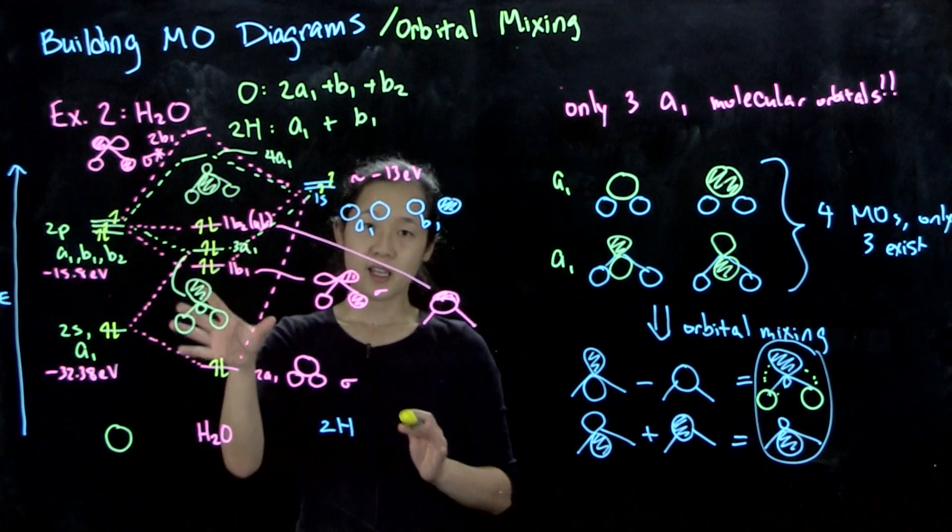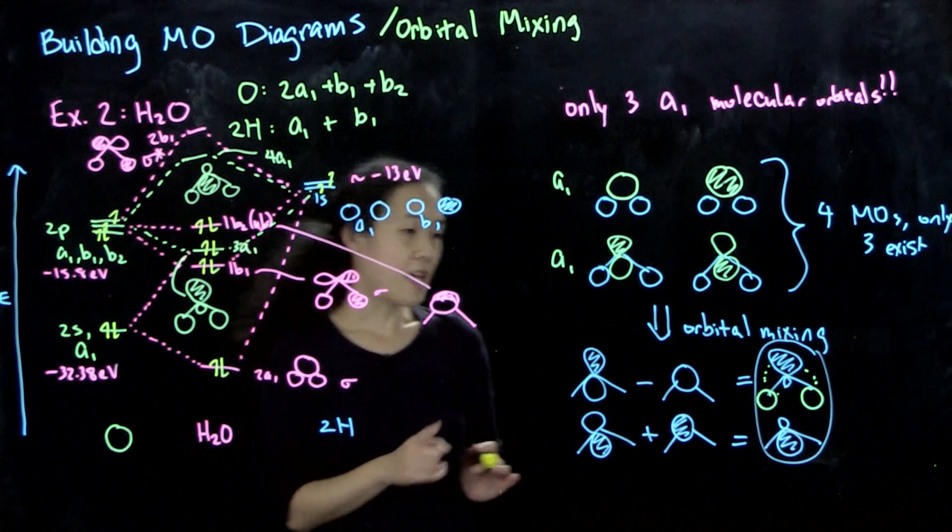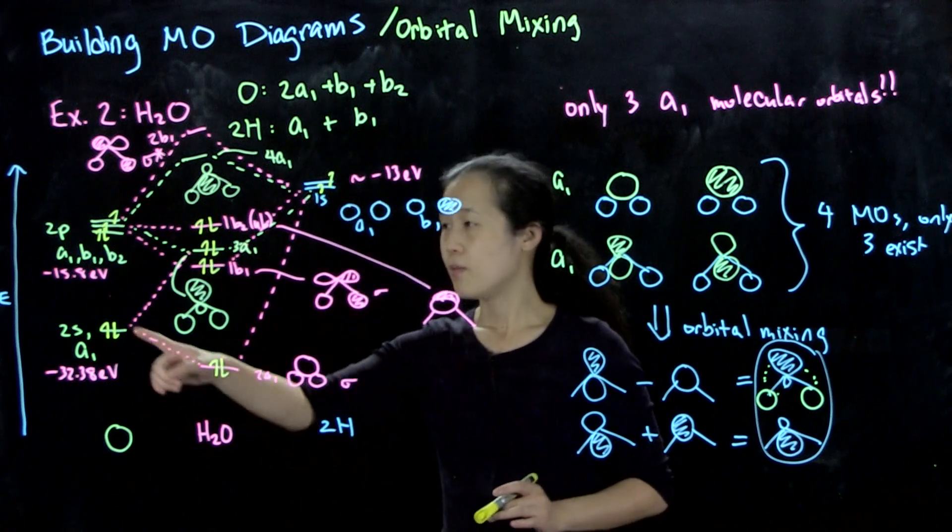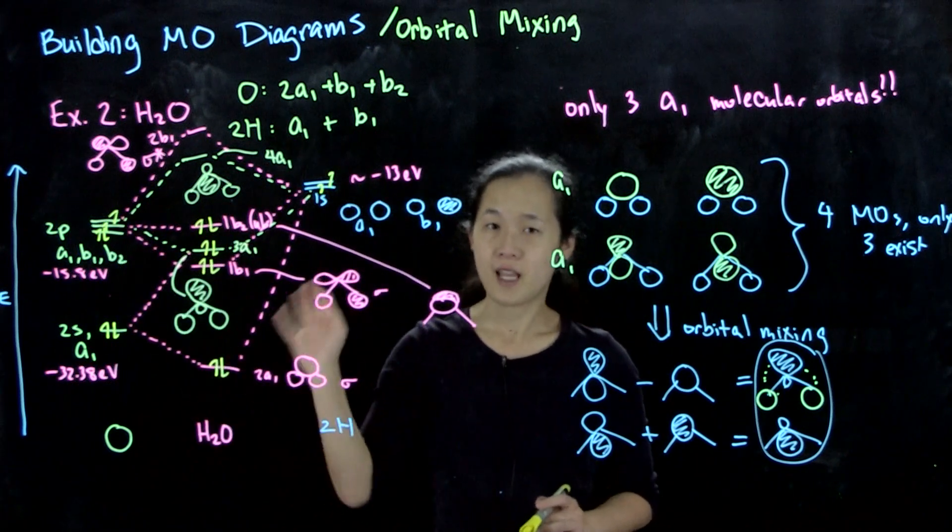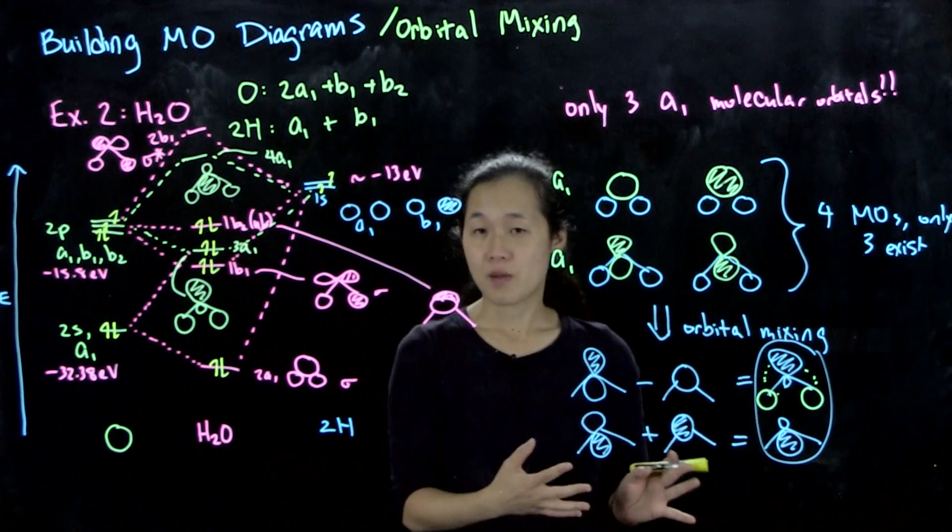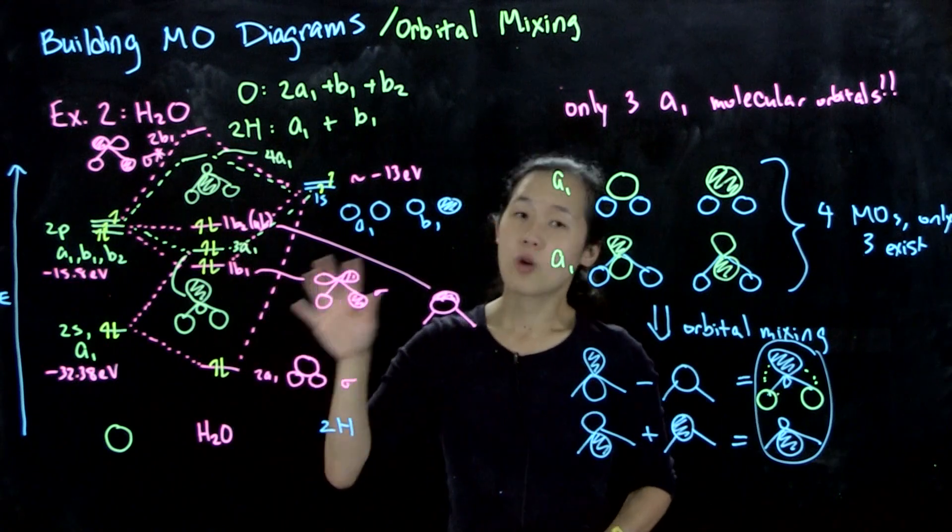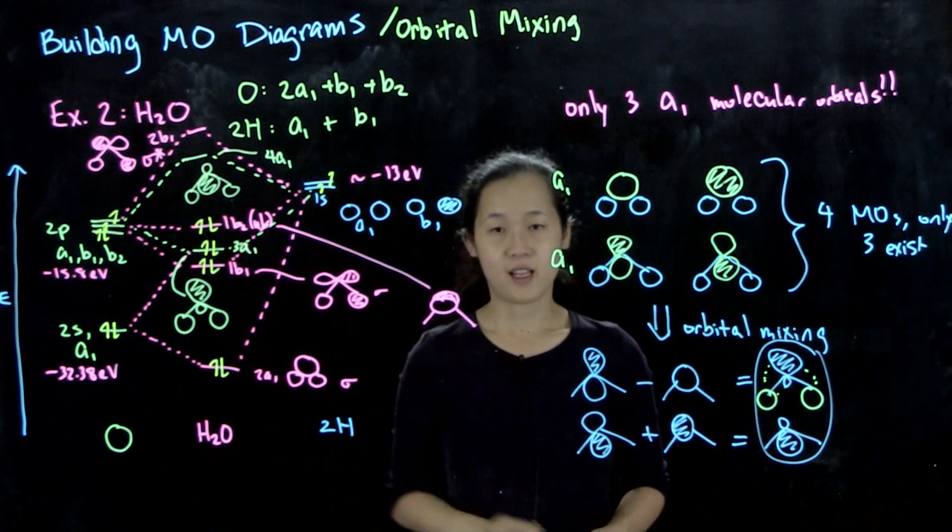This is orbital mixing, and you have to keep this in mind that this happens once we have multiple atomic orbitals of the same symmetry. You can form these linear combinations and end up with more wonky-looking molecular orbitals in the end.